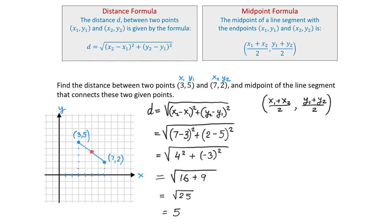Now let's replace with the given numbers. x1 is 3, x2 is 7, all divided by 2. y1 is 5, y2 is 2, all divided by 2. In each of these fractions we will add the numbers in the numerator first. 3 plus 7 is 10; 10 divided by 2 is 5. In the second fraction, 5 plus 2 is 7; 7 divided by 2 is 3.5. So the coordinates of the midpoint are 5 and 3.5.